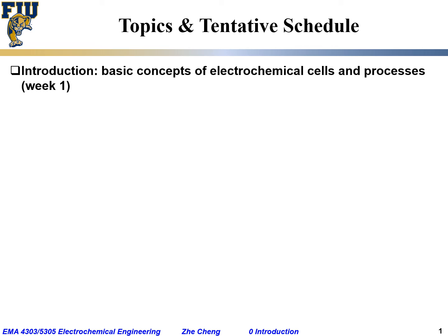Here we're going to talk about the topics and the tentative schedule for this semester. For our course, we will start with an introduction covering the basic concepts of electrochemical cells and related processes — what is an electrochemical cell, what is an anode, what is a cathode, what is an electrolyte, and the relationship between anode/cathode versus negative electrode and positive electrode.